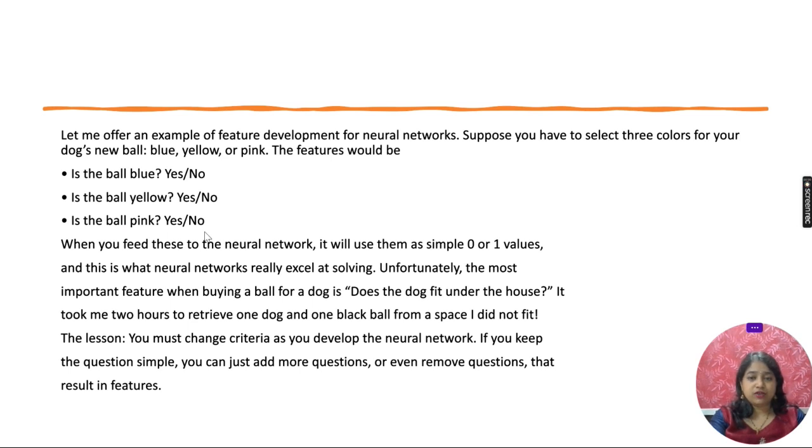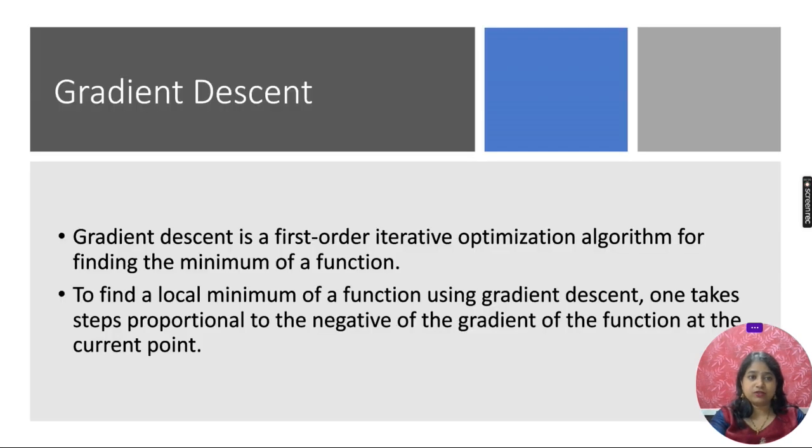Neural network, simply, what it is doing? Yes, no values are converted into zeros and ones. And then, it is trying to solve the question. It is useful, but we have to also think logically whether the question is correct or not.